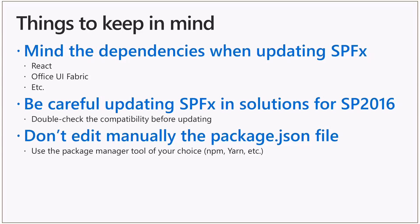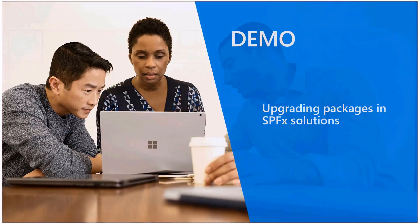Last but not least, there is one option which is the wrong one: you could think about updating the package.json file manually to update the needed versions and then just run npm install. But that's the wrong way to do it, because it is much better to use proper tools like npm so that everything will be kept in sync in your solution. You should avoid manually changing the package.json file just to update specific library versions. With that, we're ready to see how to update a solution built using SharePoint framework 1.3.0 to the latest one, which is 1.4.0 at the time of this recording. Time for demo.